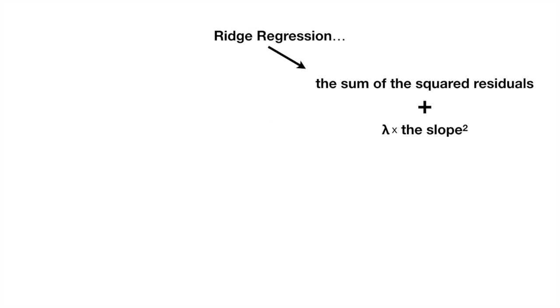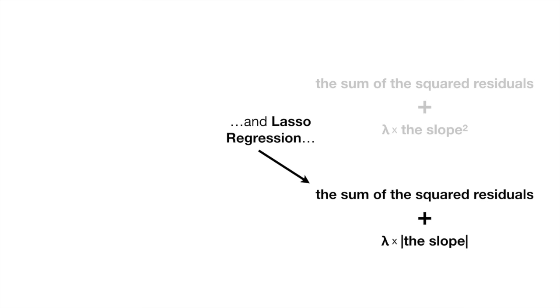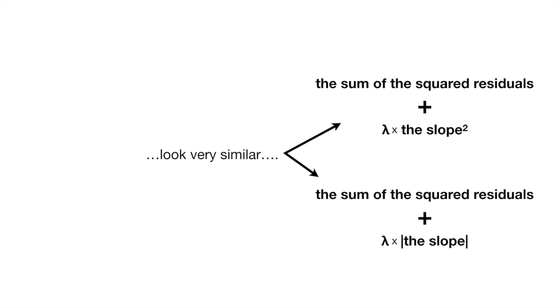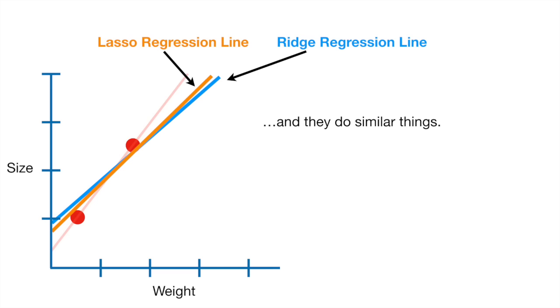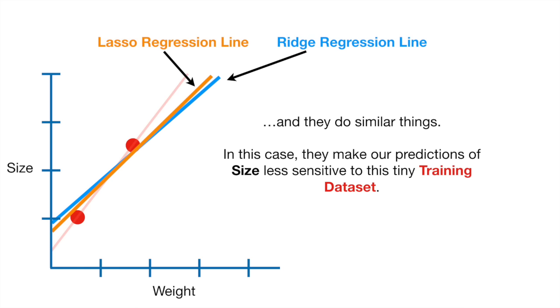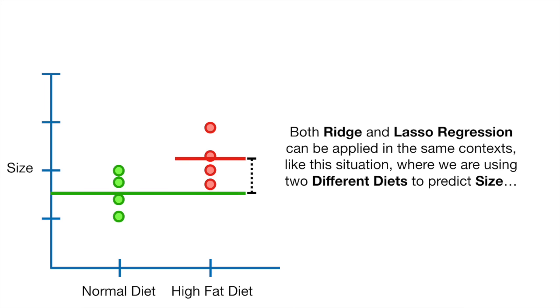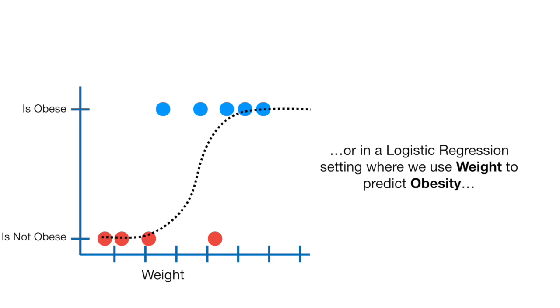Ridge Regression and Lasso Regression look very similar, and they do similar things. In this case, they make our predictions of size less sensitive to this tiny training data set. Both Ridge and Lasso Regression can be applied in the same context, like this situation where we are using two different diets to predict size, or in a logistic regression setting where we use weight to predict obesity.